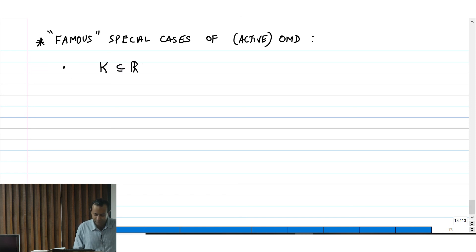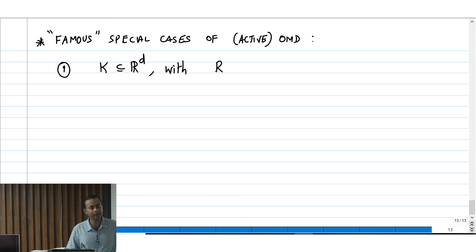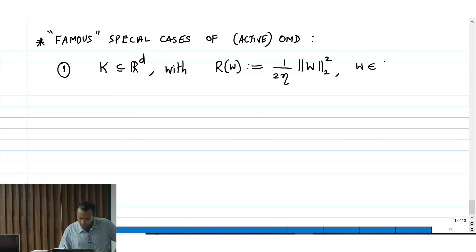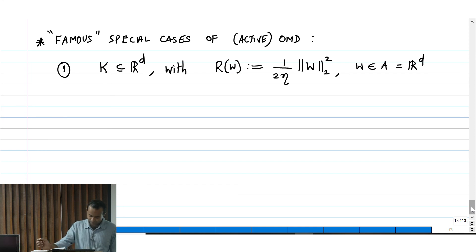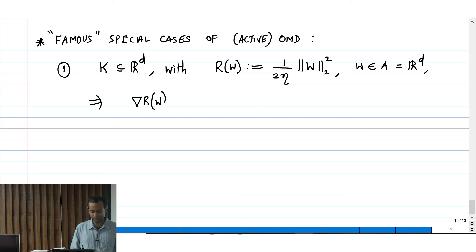If K is generally a set in R^d over which you want to do online convex optimization, this is case number 1 with R defined as R(W) = (1/2η) ‖W‖₂². This is defined over the domain R^d itself. This is a nice Legendre function which induces the Bregman divergence — it actually induces just the standard squared Euclidean distance. So DR is just W/η.